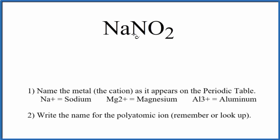To write the name for NaNO2, first we need to recognize NO2. This is a polyatomic ion and either memorized or you can look it up that it's the nitrite ion.